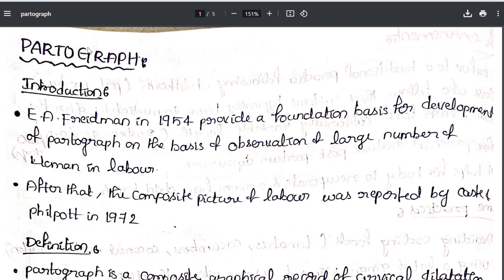Introduction to partograph. Friedman, in 1954, provided a foundation basis for the development of the partograph based on observation of a large number of women in labor. Friedman observed women before labor, during labor, and post labor. After that, a composite picture of labor was reported by Caston Fillport in 1972, forming the foundation of the partograph.